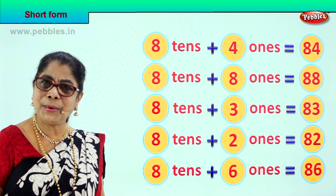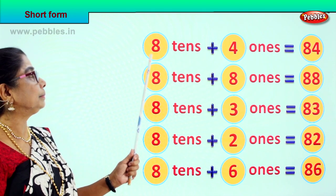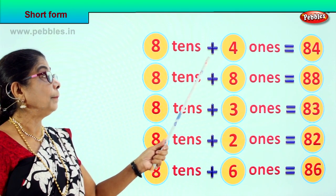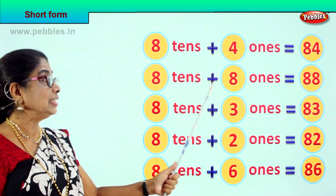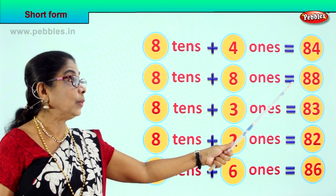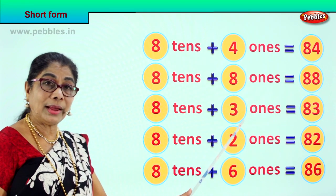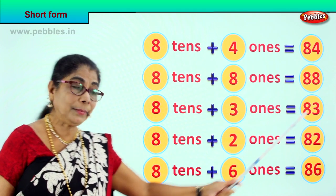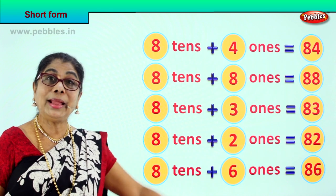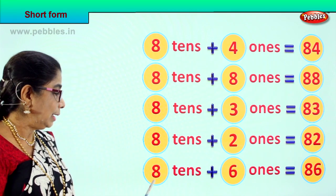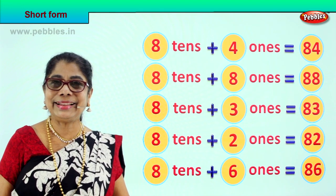Did you enjoy doing the short form? Good. Let's read together the whole thing. Eight tens plus four ones equal to eighty four. Eight tens plus eight ones is equal to eighty eight. Eight tens plus three ones is equal to eighty three. Eight tens plus two ones is equal to eighty two. 8 tens plus 6 ones is equal to 86. Good.